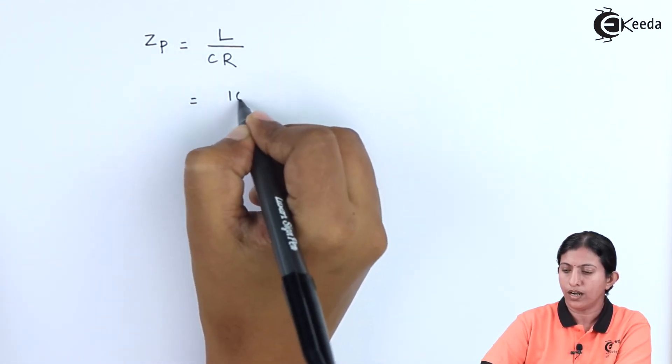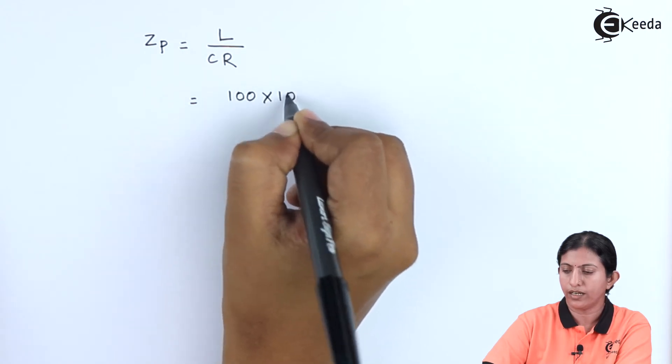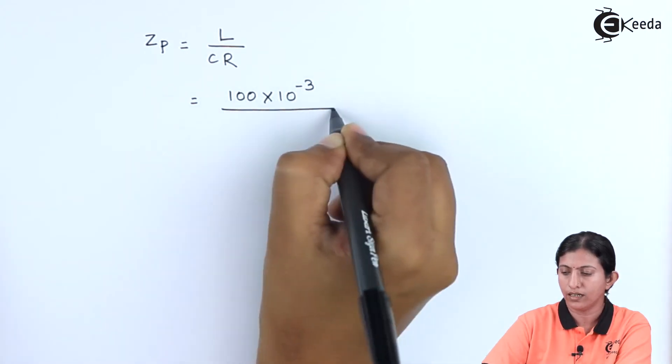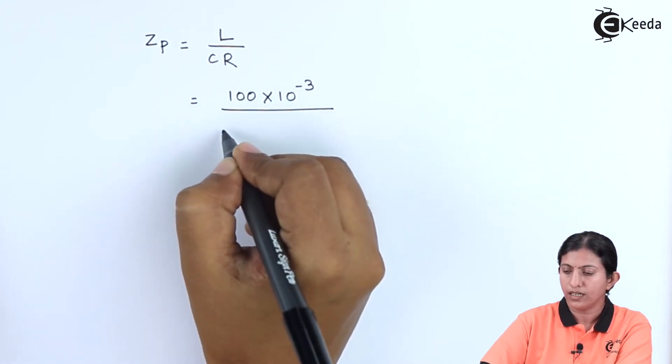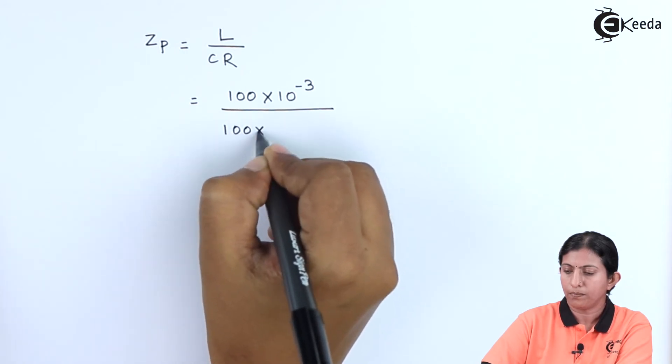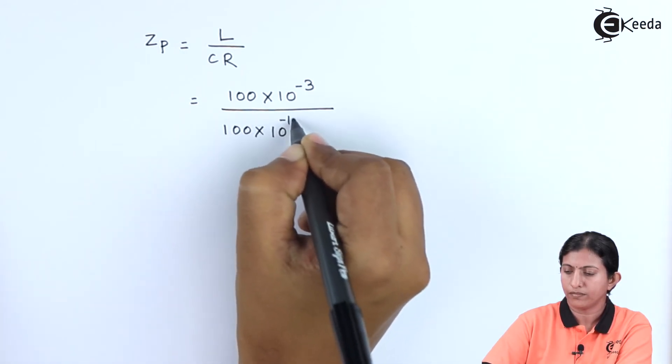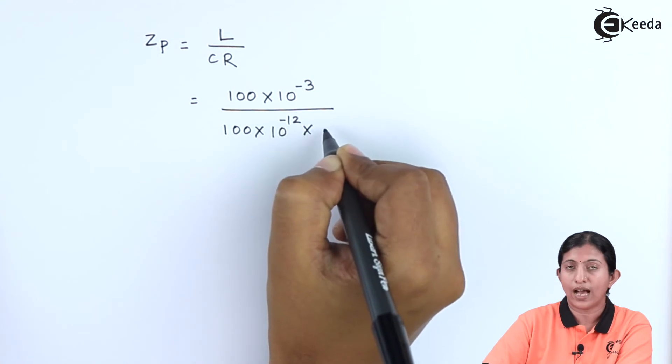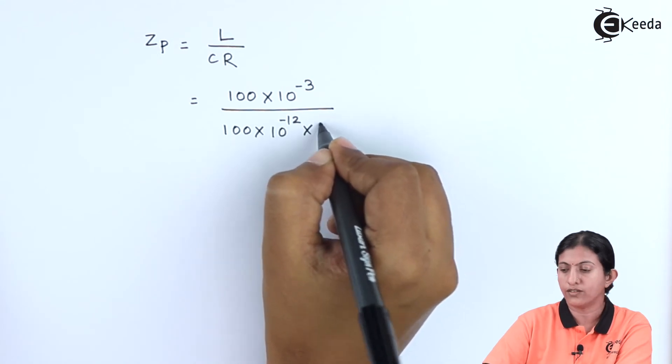L is 100 mH, so 100 × 10⁻³. C is 100 pF, so 100 × 10⁻¹². The value of R is 5 ohm.